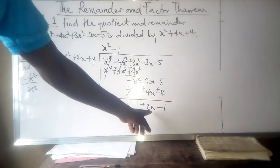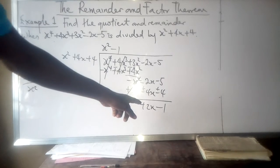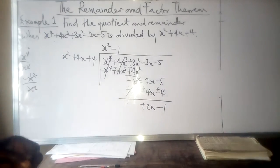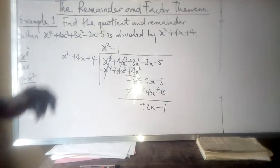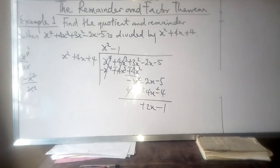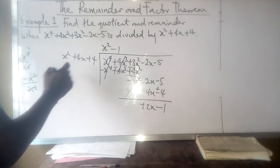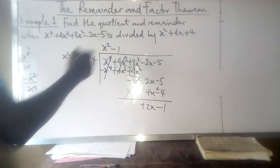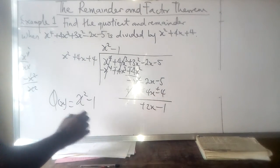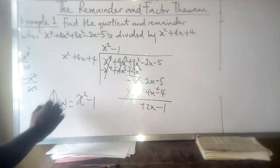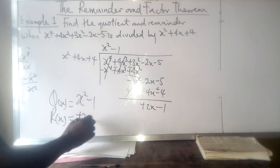Since we cannot divide 2x by x² (the degree of the remainder is 1 and the degree of the divisor is 2), we stop here. The quotient Q(x) is x² - 1, and the remainder R(x) is 2x - 1.